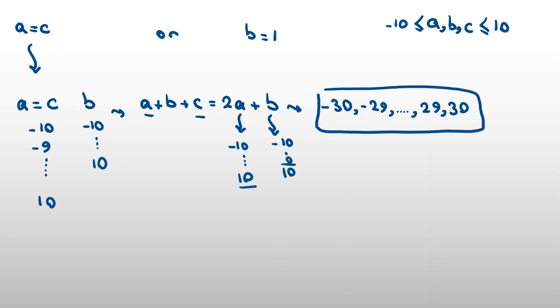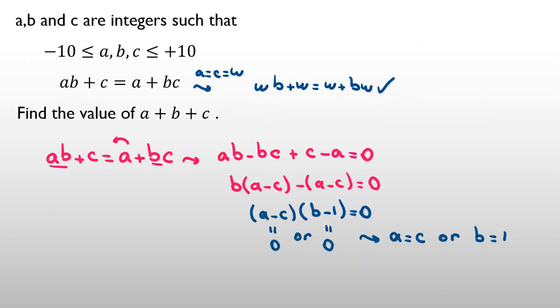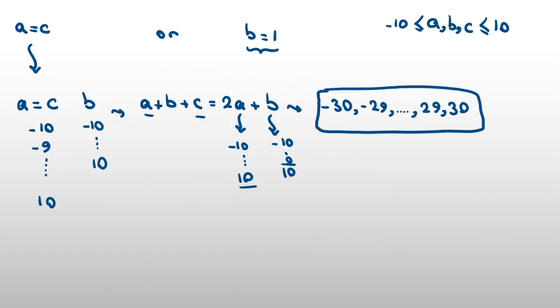And now for the last case, b is 1, and a and c can be any number. So if I check b equals 1 here, let me erase this and check b equals 1 to see does it work. If b is 1, it will be a plus c equal to a plus c, which is correct. Now here b is 1. I want to calculate a plus b plus c. b is 1, and a and c can be any number, negative 10 to 10.